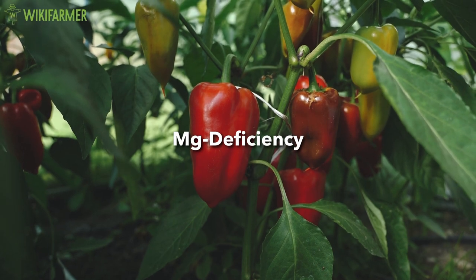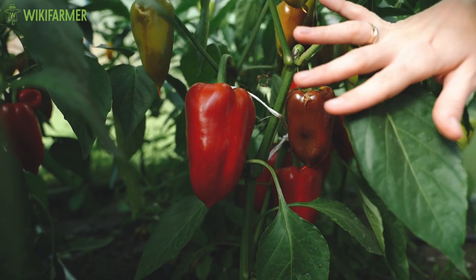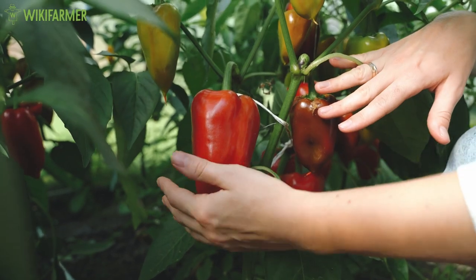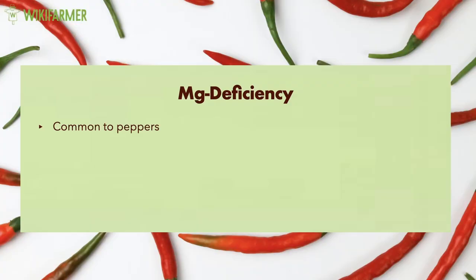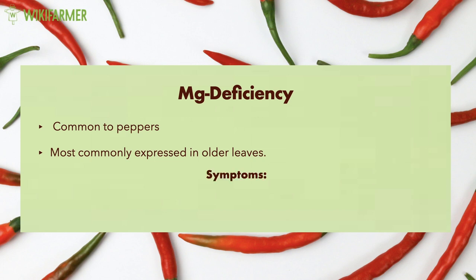Magnesium Deficiency. Magnesium deficiency is common to peppers and is most commonly expressed in older leaves. The most obvious magnesium deficiency symptom is foliage discoloration while the veins remain green.